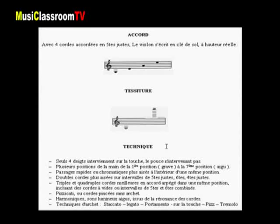On peut produire au violon différentes sonorités telles que les doubles, triples et quadruples cordes, qui sont de véritables accords à deux, trois ou quatre sons. Généralement, il est plus aisé de réaliser ces triples cordes ou quadruples cordes sur des intervalles par exemple de quintes ou de quartes justes, ou encore de sixtes, qui correspondent à l'accord de l'instrument.